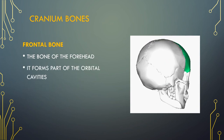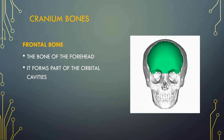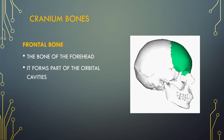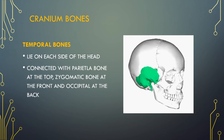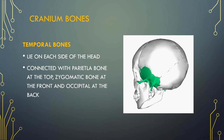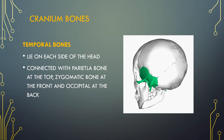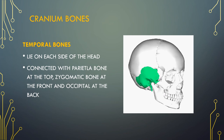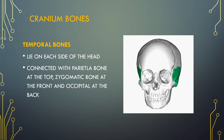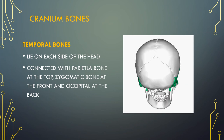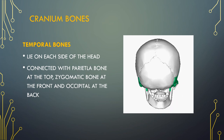The frontal bone consists of two portions making up the bony part of the forehead, part of the bony orbital cavity holding the eye, and part of the bony part of the nose. The temporal bones are two major bones in the skull or cranium. They lie on each side of the head and help form the sides and base of the skull, where they protect the temporal lobe of the brain and surround the ear canal.